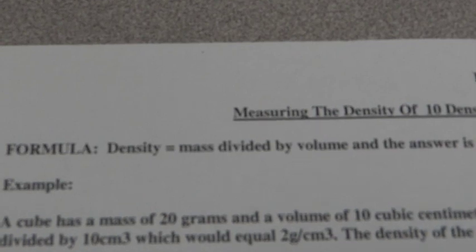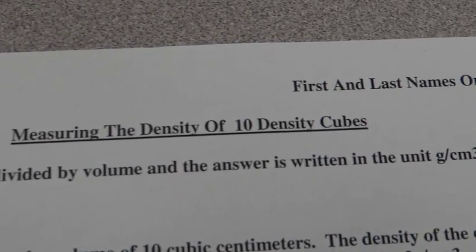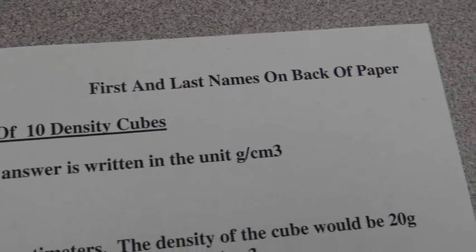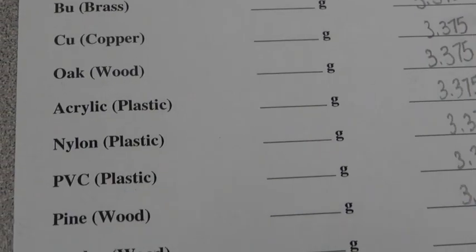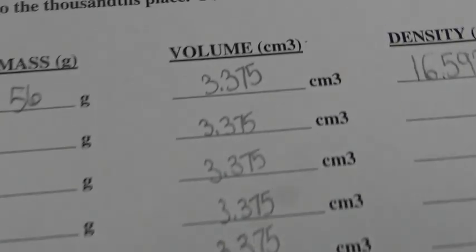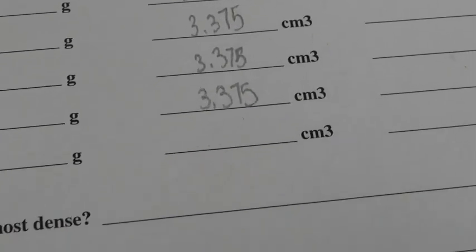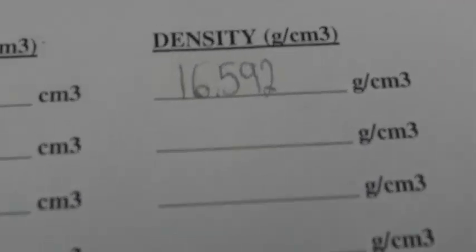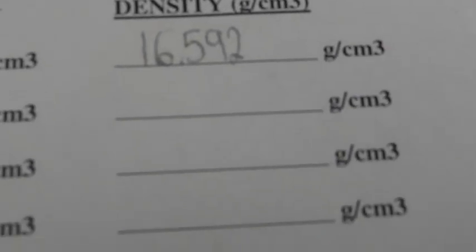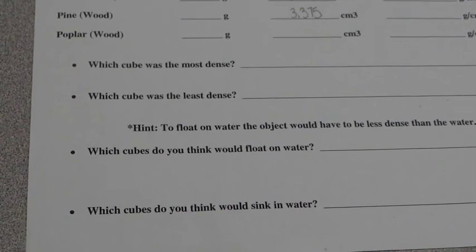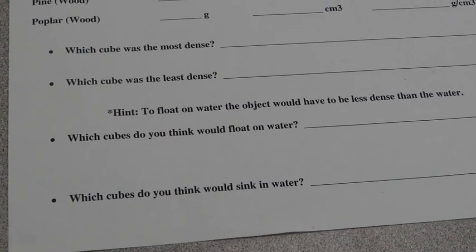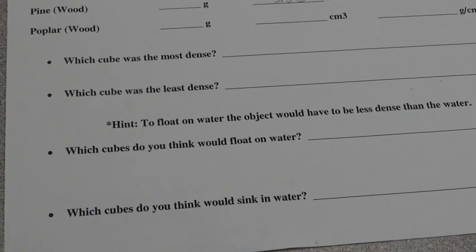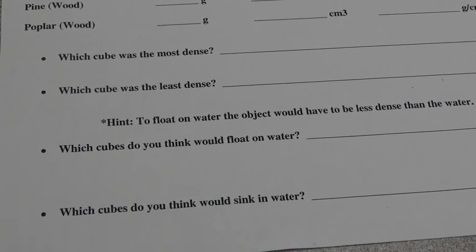Now you're done, but double-check: make sure every member of your group wrote their name at the top or on the back of the page, that you have the mass of each density cube, the volume of each density cube (it should be the same number), the density of each density cube, and that you've answered all four questions. Then, my friends, turn the sheet in to Dill Nan the Science Man.